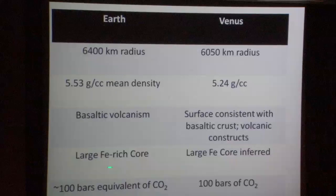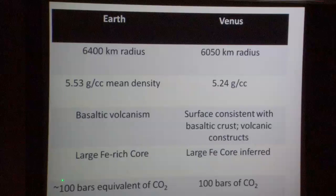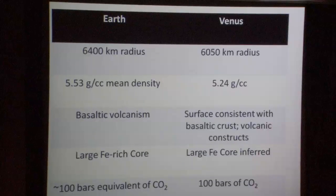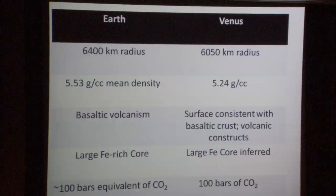Curiously, if you look at the carbon budget accessible to us — in Earth's case CO2 bound up in rocks and to some extent in the ocean — that inventory is very similar to what we see in Venus's atmosphere. This may be coincidence because total carbon is not known for either planet and speciation could be different, but it's at least a suggestion that there is some similarity in the volatile inventory of the two bodies.